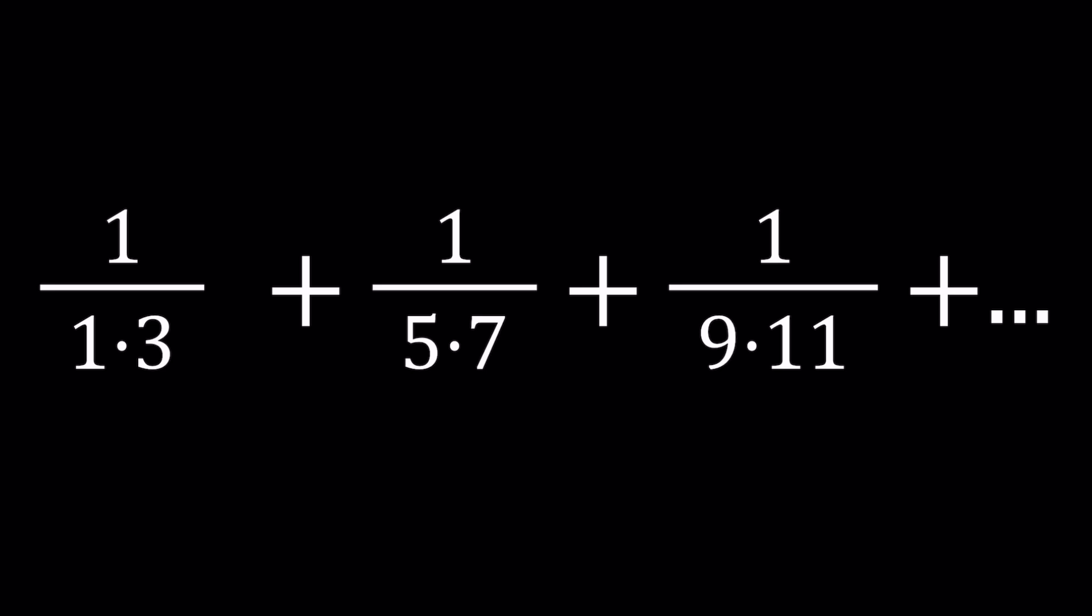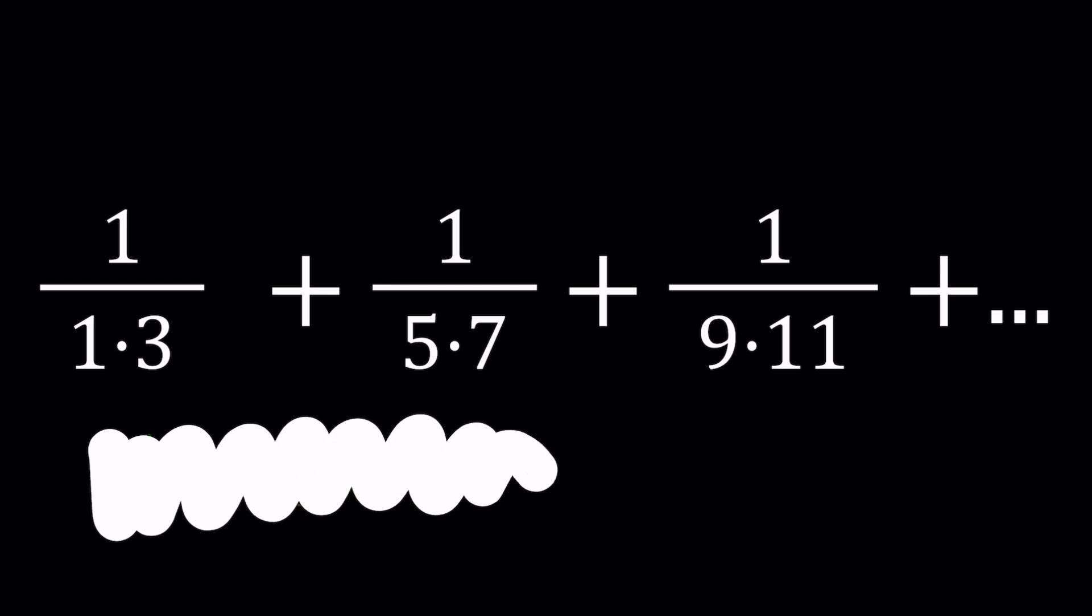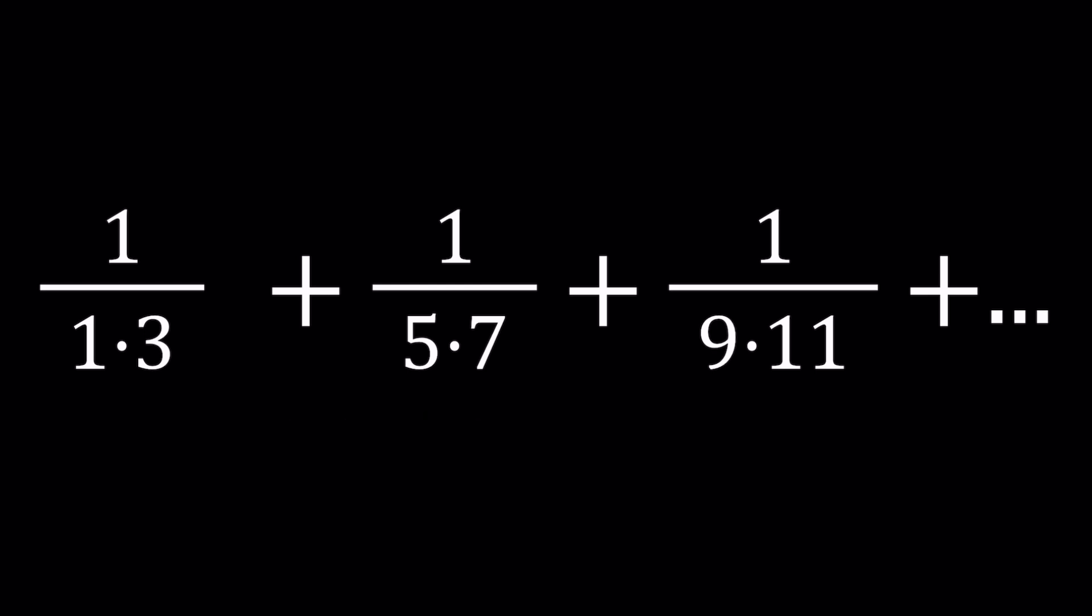This is definitely very different from 1 over 1 times 3 plus 1 over 3 times 5 plus 1 over 5 times 7, where the numbers are repeated in each product. The second one is actually fairly easy to do, maybe in another video we can talk about that, but let's focus on this right now.